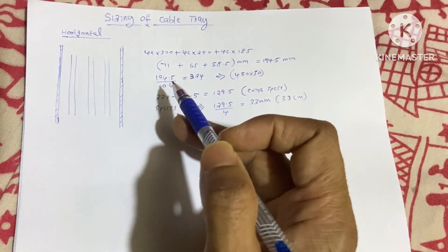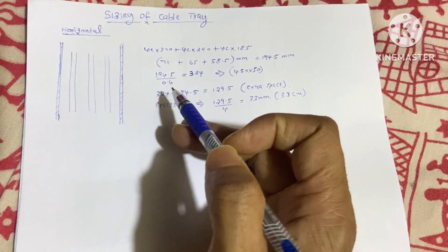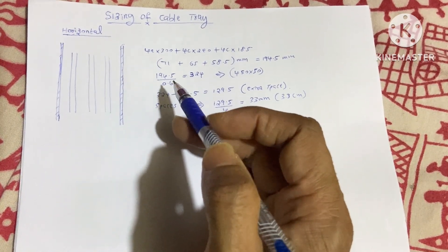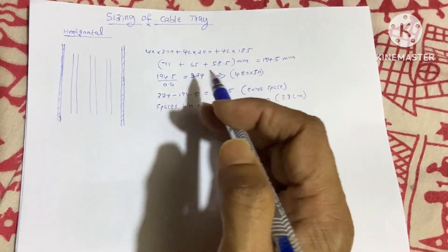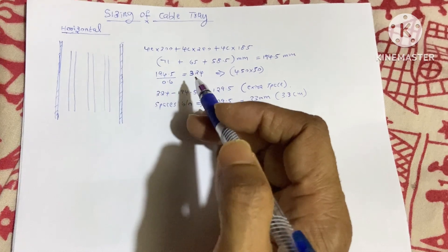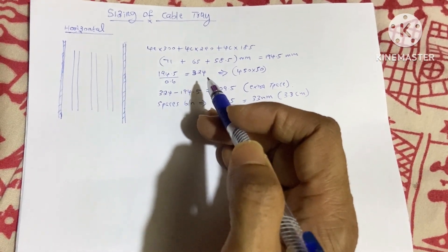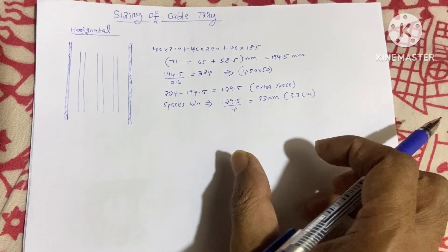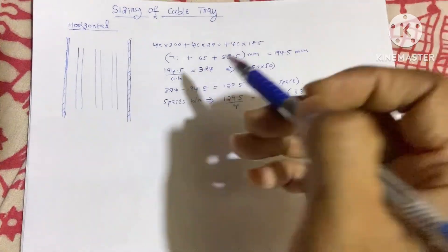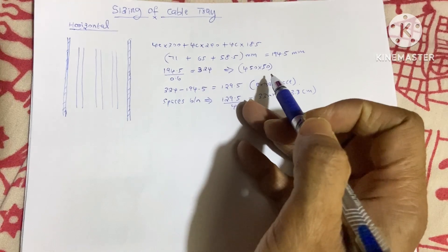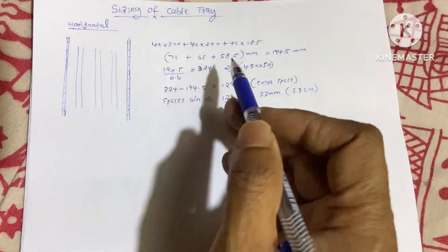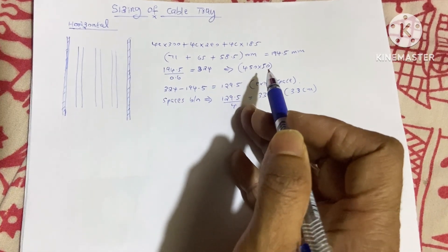To calculate the cable tray size, we apply a safety factor of 60%, so we divide 194.5mm by 0.6 to get 324mm. Since a 324mm cable tray is not available, we select a 450×50mm cable tray, where 450mm is the width and 50mm is the height.